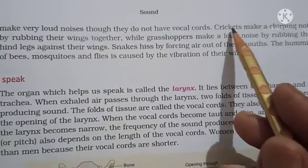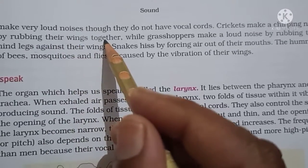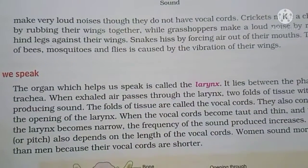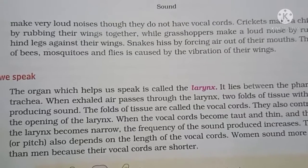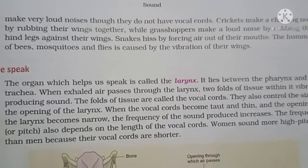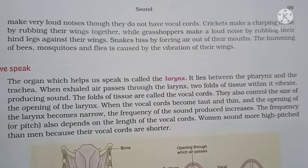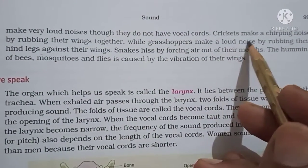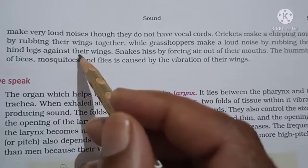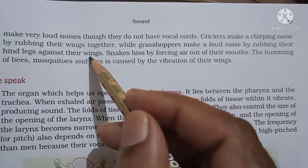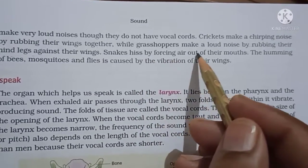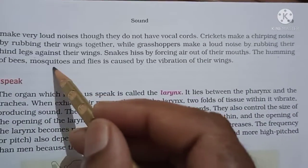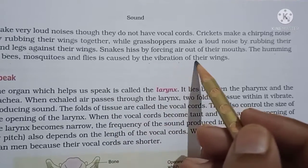Some insects like crickets produce sound by rubbing their wings together. Mosquitoes, flies, and butterflies produce sound by vibrating their wings. Grasshoppers make loud noise by rubbing their hind legs against their wings. Snakes hiss by forcing air out of their mouth. The humming of bees, mosquitoes, and flies is caused by the vibration of their wings.